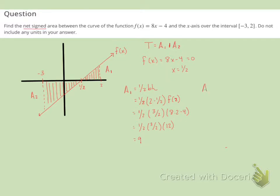The second area, same formula. Now the base is the distance between 1/2 and negative 3. So we're going to do 1/2 minus negative 3. And the height is going to be the function evaluated at negative 3.